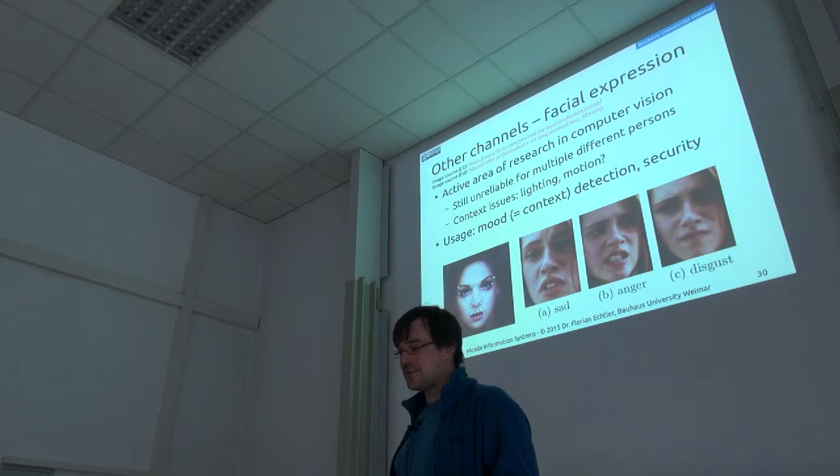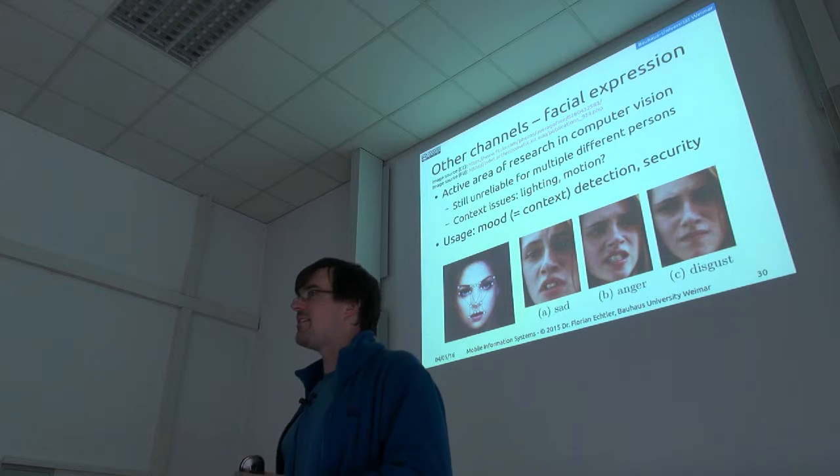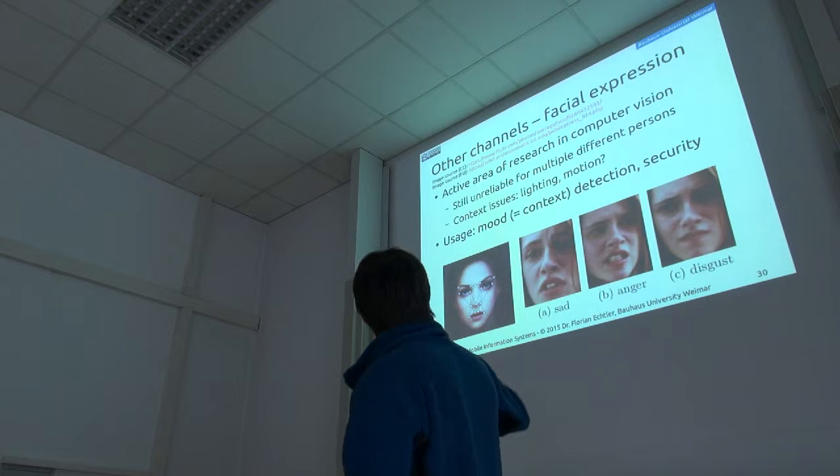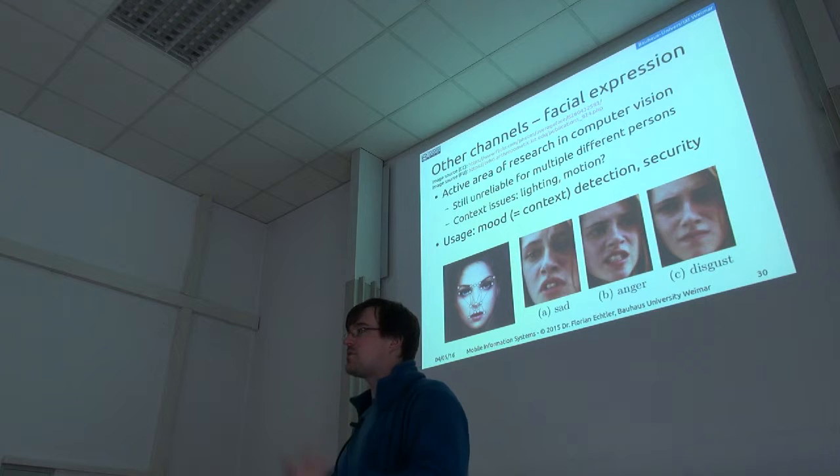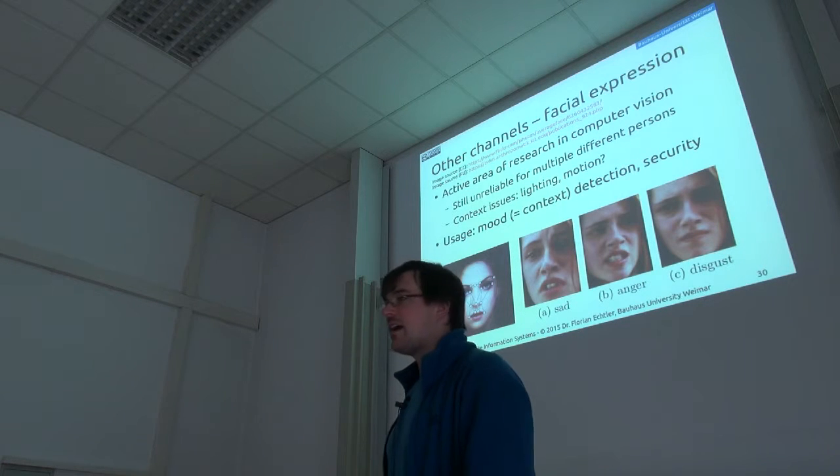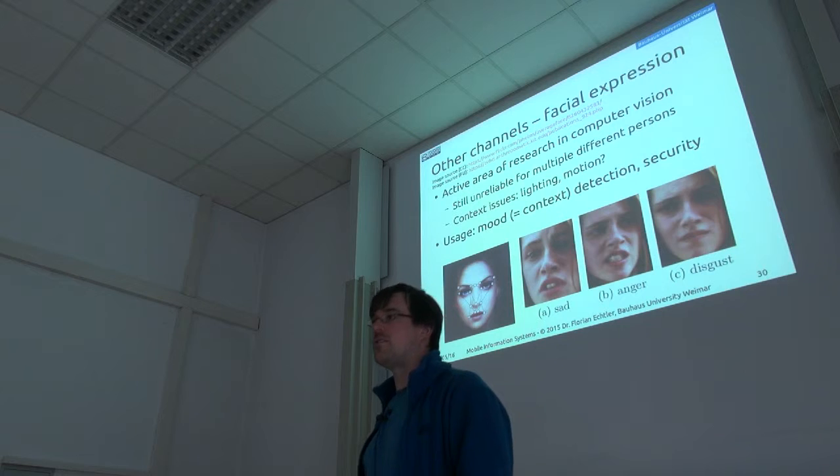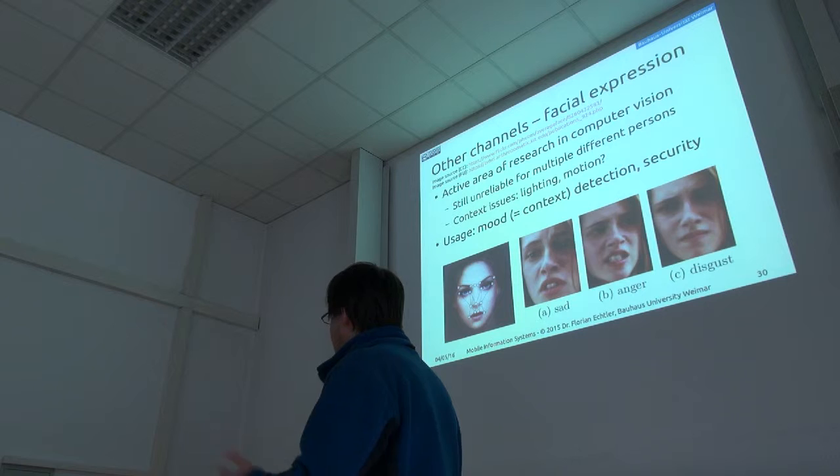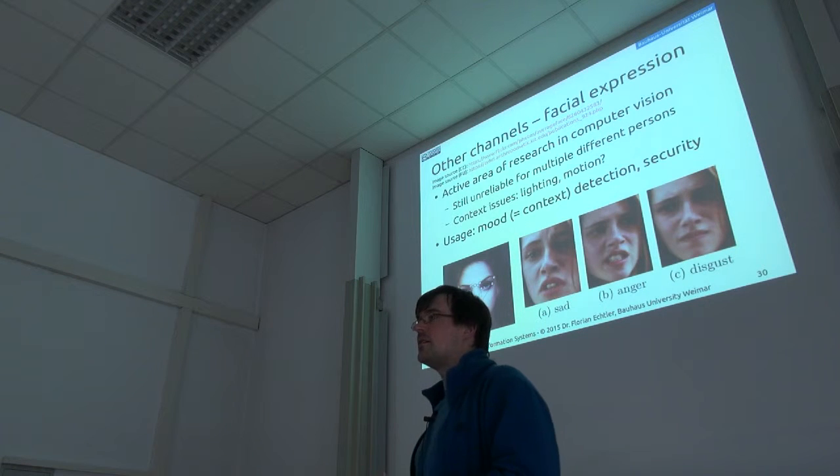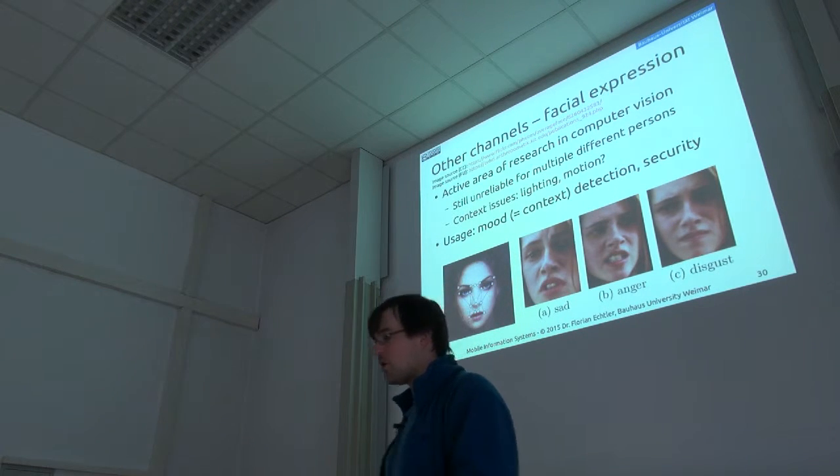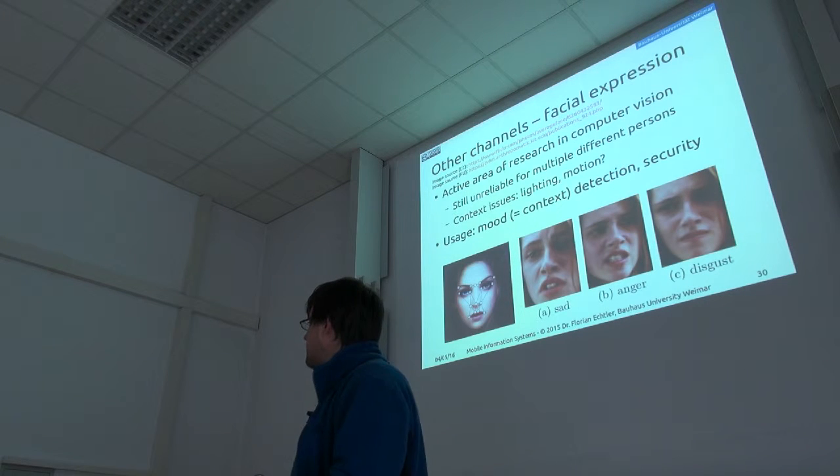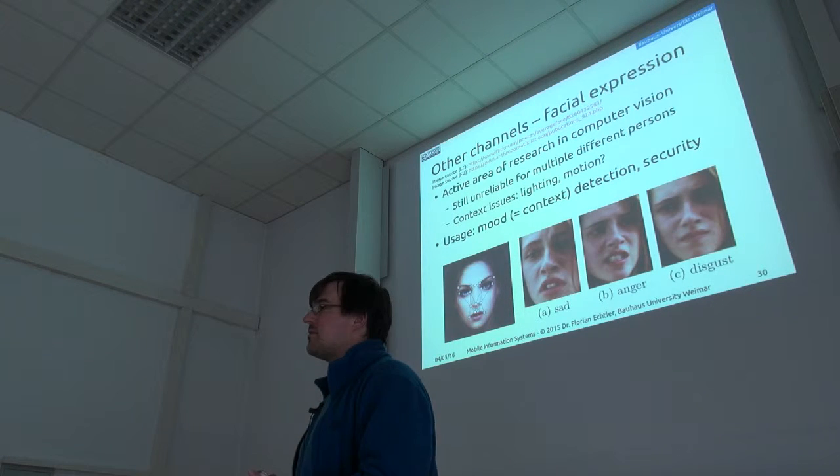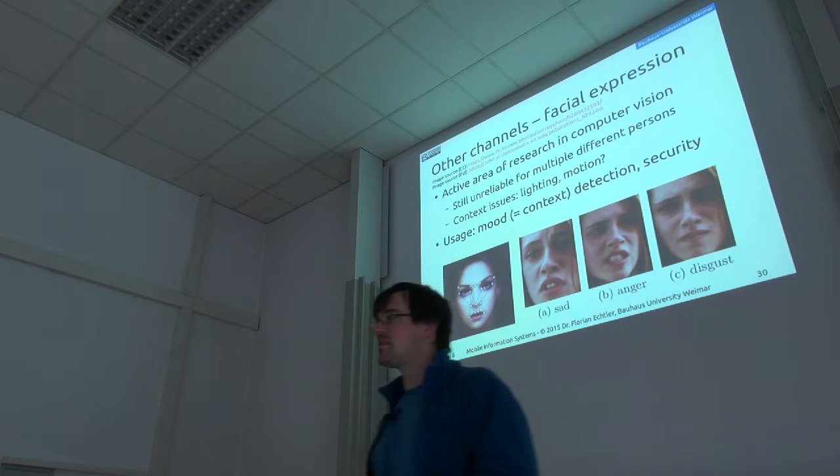Then facial expression, also a channel. Again, a very complex computer vision problem. So usually works like this, that you assign different control points to different parts of the user's face. And from the relation of the control points to each other, then you can infer the mood or also the context of the user. Problem here is, again, that this is very much dependent on the user. So it needs some kind of training.